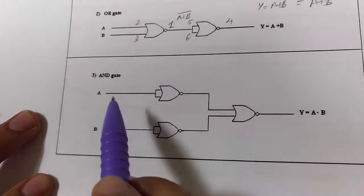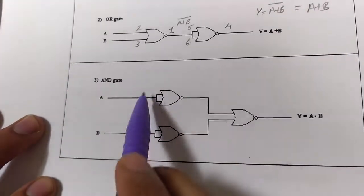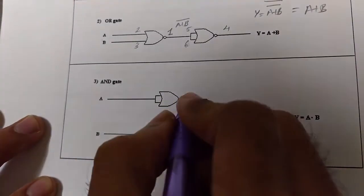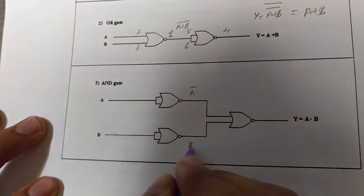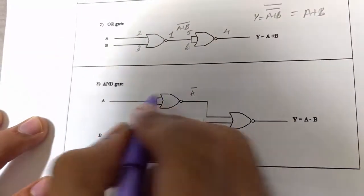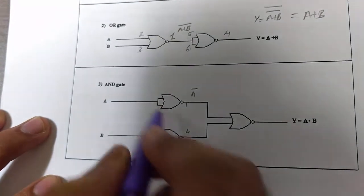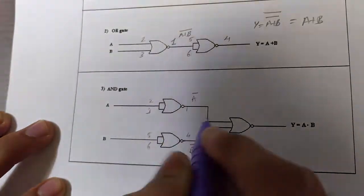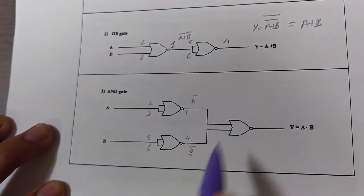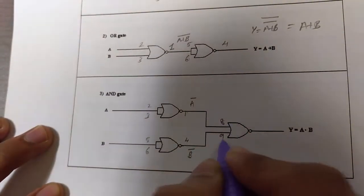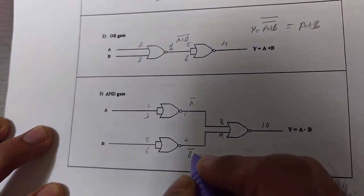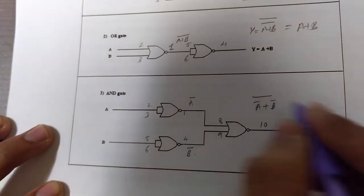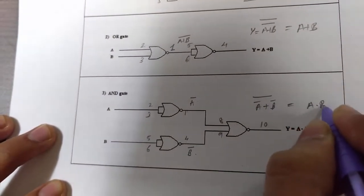This is how we get the AND gate using NOR gate. Two NOR gates are used as NOT gates — giving input A we get A bar, and giving input B we get B bar. Pin 1 gives A bar and pin 4 gives B bar. Inputs A and B are at pins 2, 3 and 5, 6 respectively. The outputs from pins 1 and 4 are given to pins 8 and 9, and the final output is taken from pin 10. So A bar plus B bar is NOR'd again, giving us A dot B.